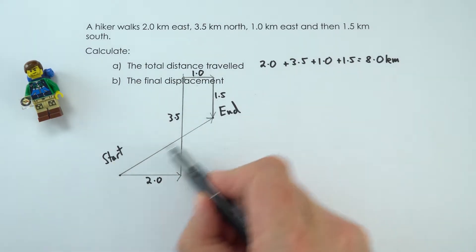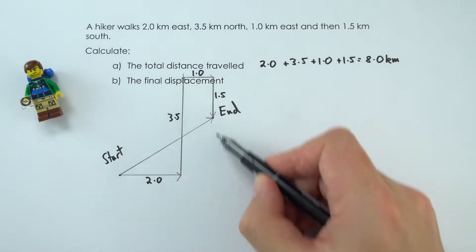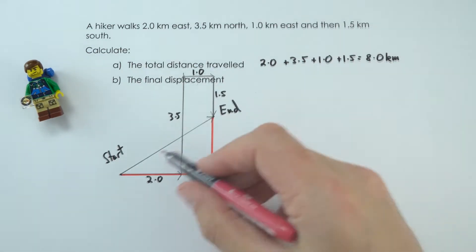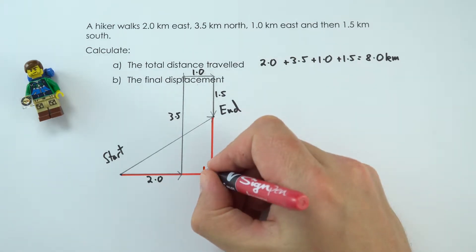If they started here and ended here, I can see that there's a right angle triangle forming. So I'm just going to go over that in a red pen. That's my triangle drawn in. I'm going to put a right angle there.